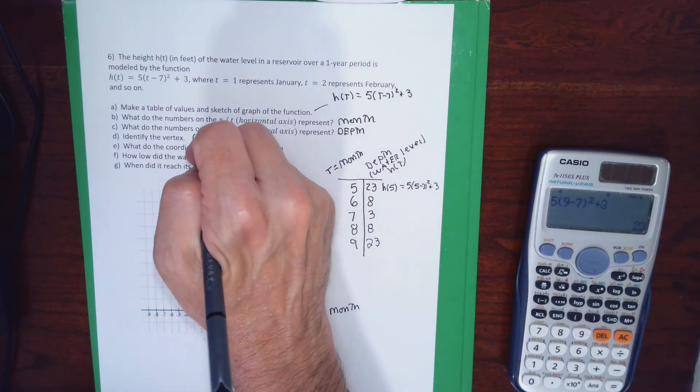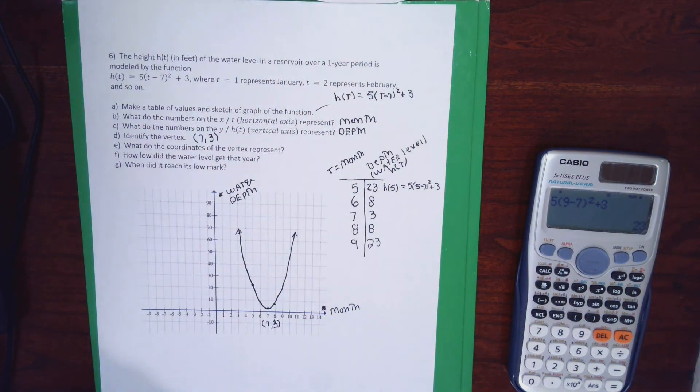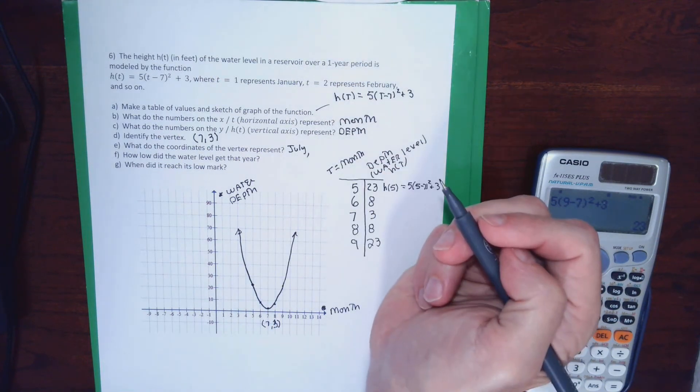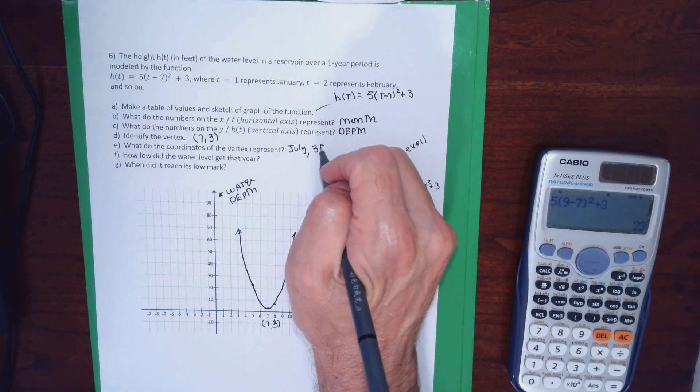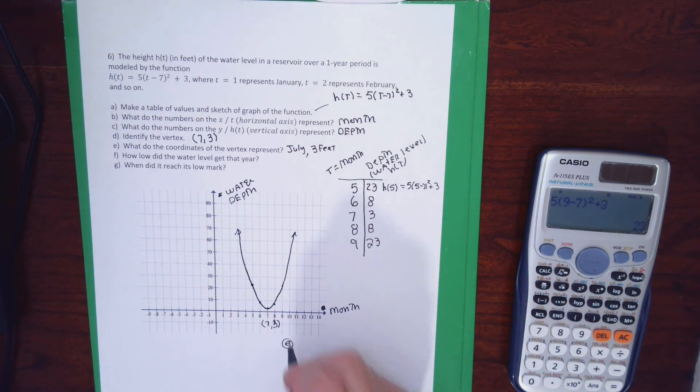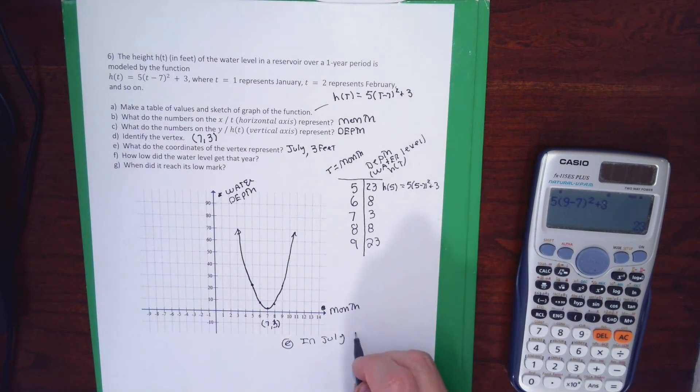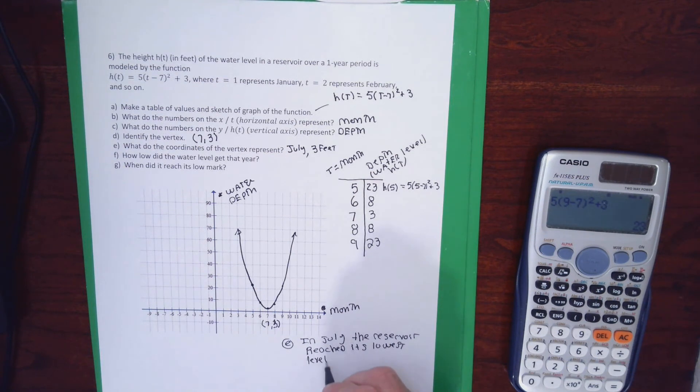And then identify the vertex. The vertex is the point 7, 3. What do the coordinates of the vertex represent? The 7 represents July. And the 3 represents the 3 feet depth of the reservoir. Let me try to write E down here. So in July, the reservoir reached its lowest level. Doesn't ask for that, but I'll tack it on. In July, the reservoir reached its lowest level. This would be a better answer, of 3 feet.